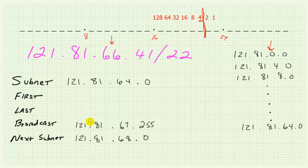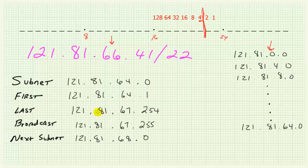Now that we know the broadcast of the current subnet, it's easy to figure out the first and last hosts. We take the subnet and add one to get the first host, and take the broadcast and subtract one to get the last host. For the 121.81.64.0 subnet, the first host is 121.81.64.1, the last host is 121.81.67.254, and we can see that our given IP address falls within that range. The broadcast is 121.81.67.255 and the next subnet is 121.81.68.0.